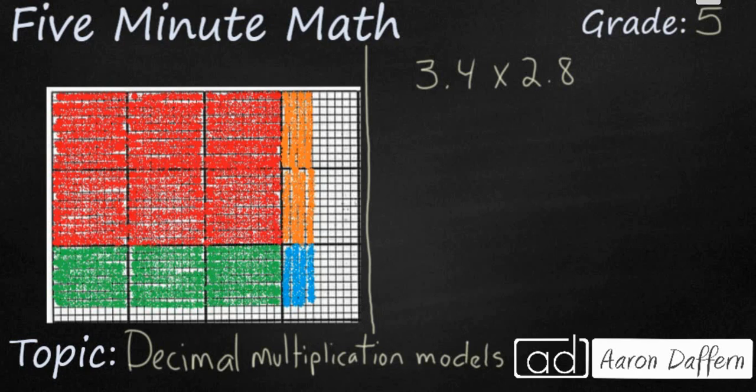So we're looking at this problem here, 3.4 times 2.8, and I've drawn out an area model over here on the left. Let me show you how you can read it here. We'll also look at how we can solve this problem if you don't necessarily have any graph paper with you. But from left to right you see our first factor here, 3.4.